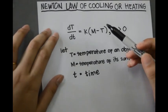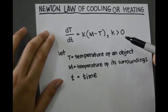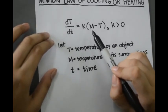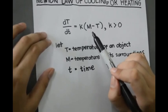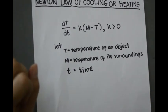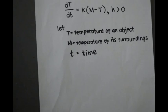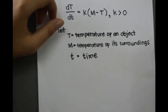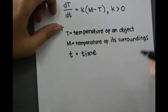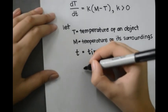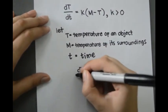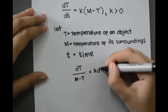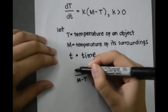Newton's Law of Cooling: dT/dt equals k times (M minus T), where k is greater than 0. The T here is the temperature of an object, while M is the temperature of its surroundings, and t is the time. As the differential equation is separable, we can separate it to have one side solely dependent on T and the other on time: dT over (M minus T) equals k dt. We will integrate both sides.